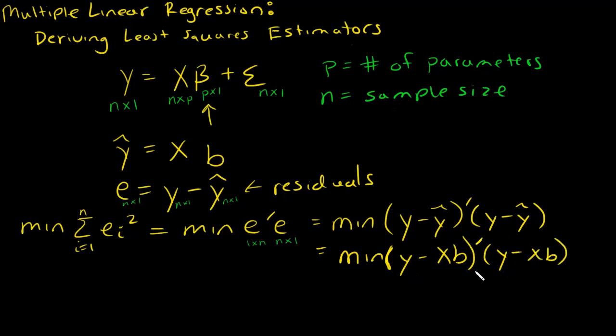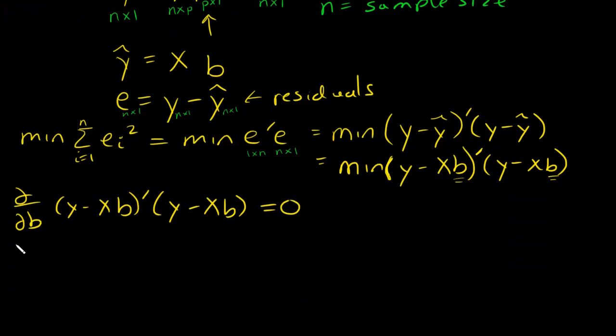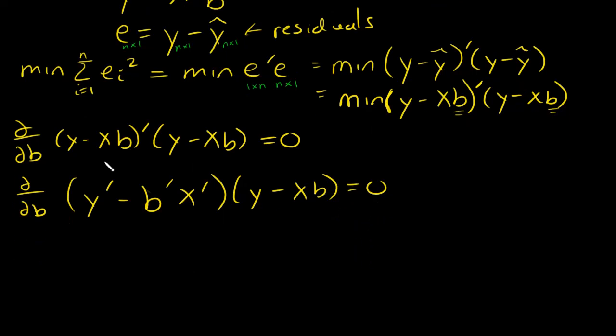I want to minimize this and figure out what B is, so I'll take the derivative with regards to B and set it equal to 0. I want to take the derivative with regards to B of y minus XB transpose times y minus XB and set this equal to 0. First, let's bring this transpose in, so I get y transpose minus, when you take the transpose of a product you have to reverse the order, so this becomes B transpose X transpose.